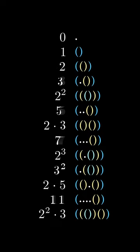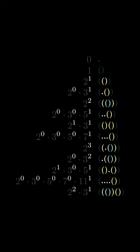If you look at the full factorization, the encoding becomes quite clear. The powers of the primes correspond to the inner sequence of dots and brackets.